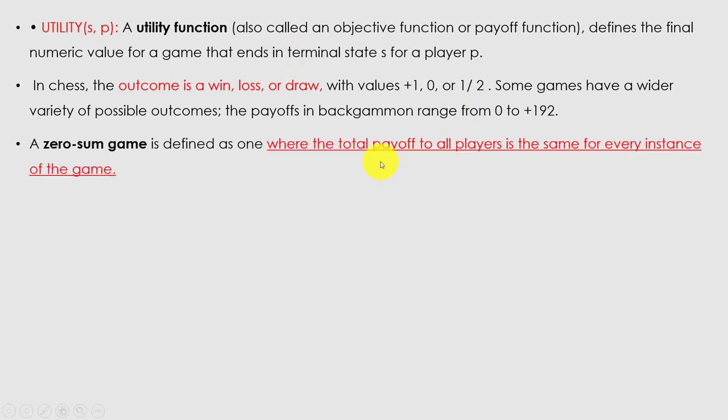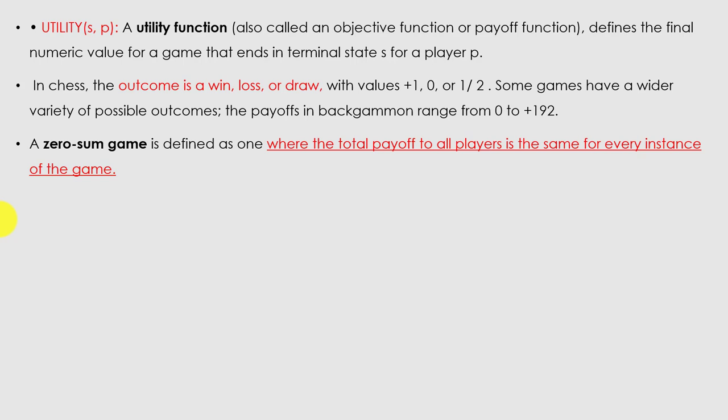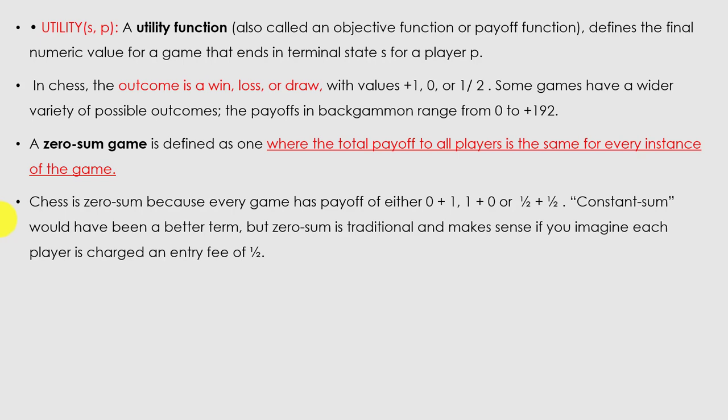A zero-sum game is one where the total payoff to all players is the same for every instance of a game. At every step the score is equal — that is a zero-sum game. Chess is zero-sum because every game has a payoff of either 0+1, 1+0, or 1/2+1/2. Constant-sum would be a better term, but zero-sum is traditional.